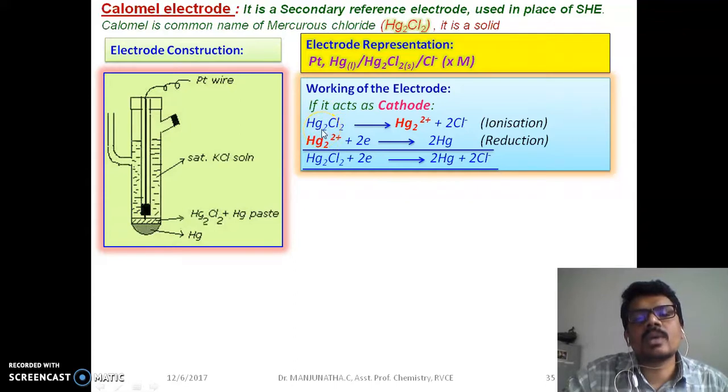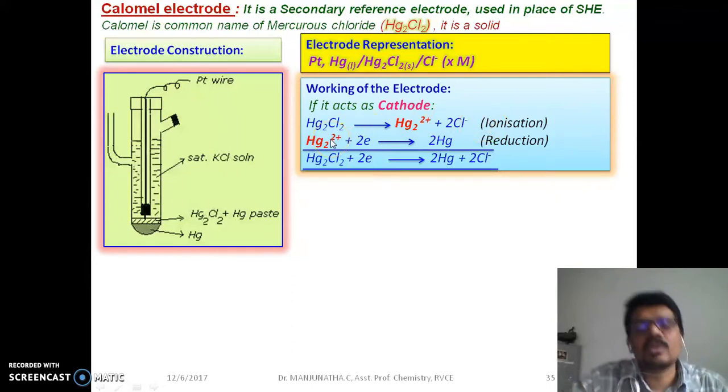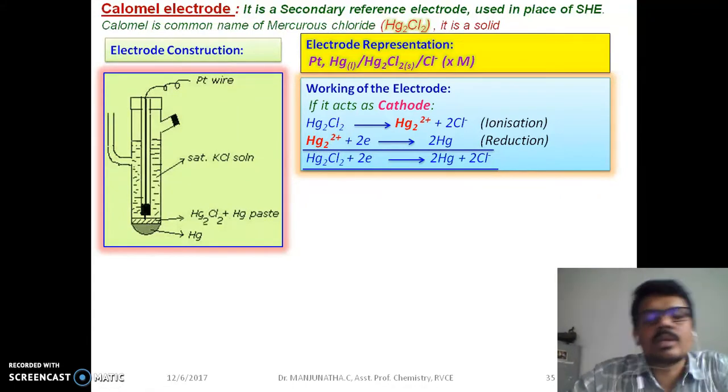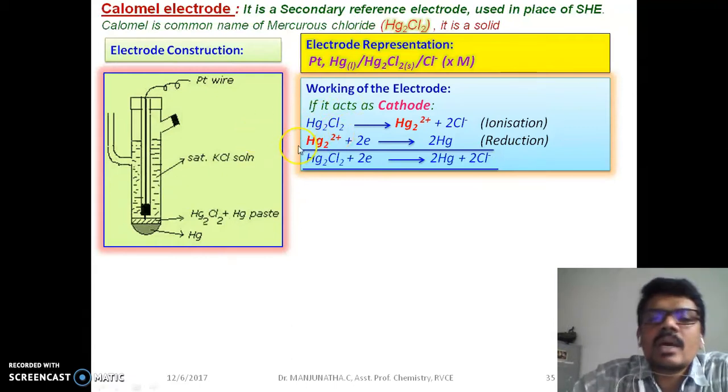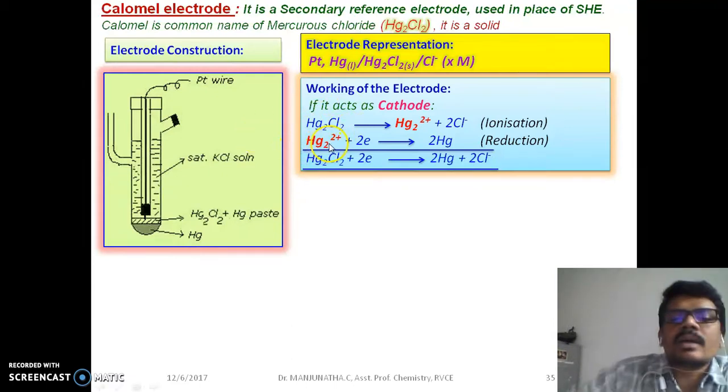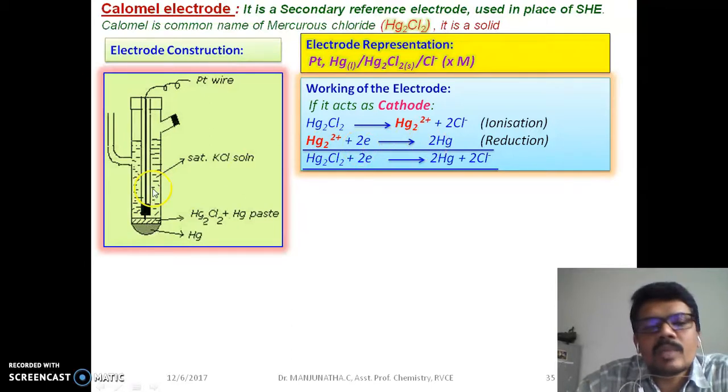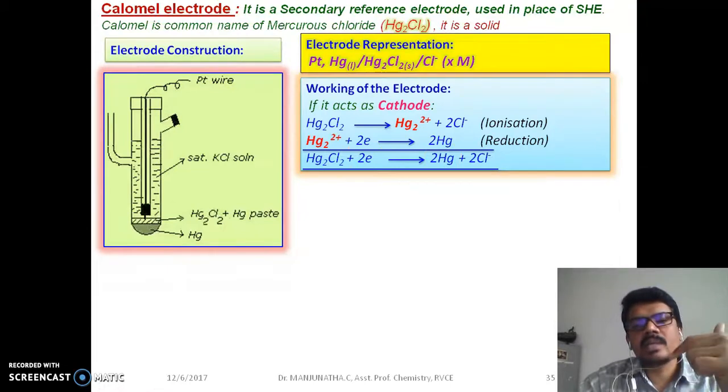This mercury chloride, Hg2Cl2, this paste, it will undergo dissociation to form mercury ion and Cl-. This is also called ionization and we get a free mercury ion. Mercury is actually Hg2 2+, two metal mercury ions will be in plus one plus one state. This mercury ion accepts two electrons from outside and it becomes mercury. The overall reaction is mercury chloride accepts two electrons to form mercury and it settles down, and that Cl- will go up.